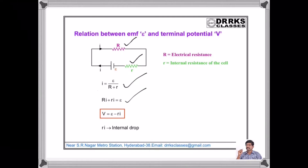Since V = RI, the terminal potential V = E − rI, where rI is called the internal drop.